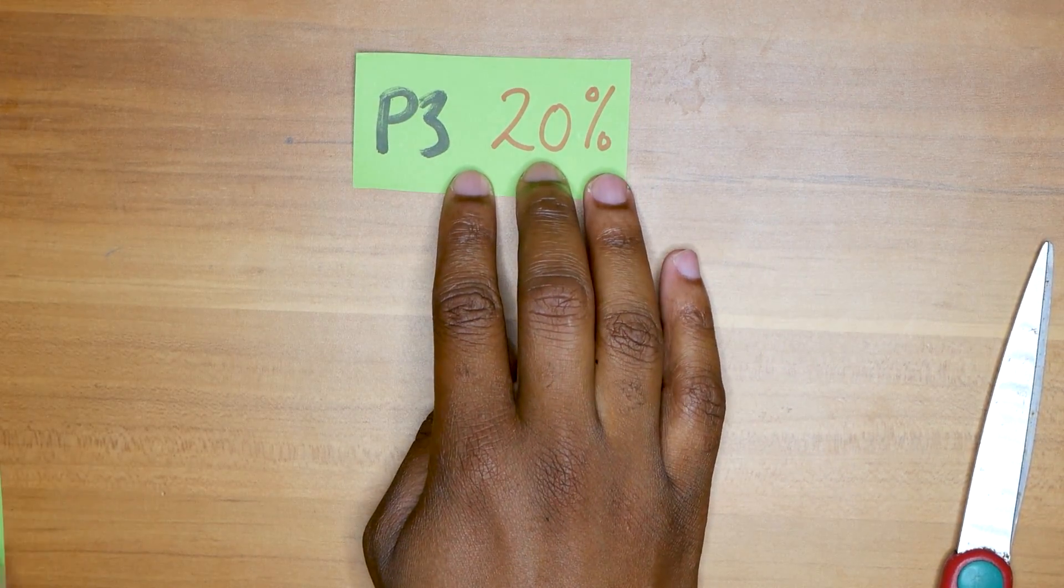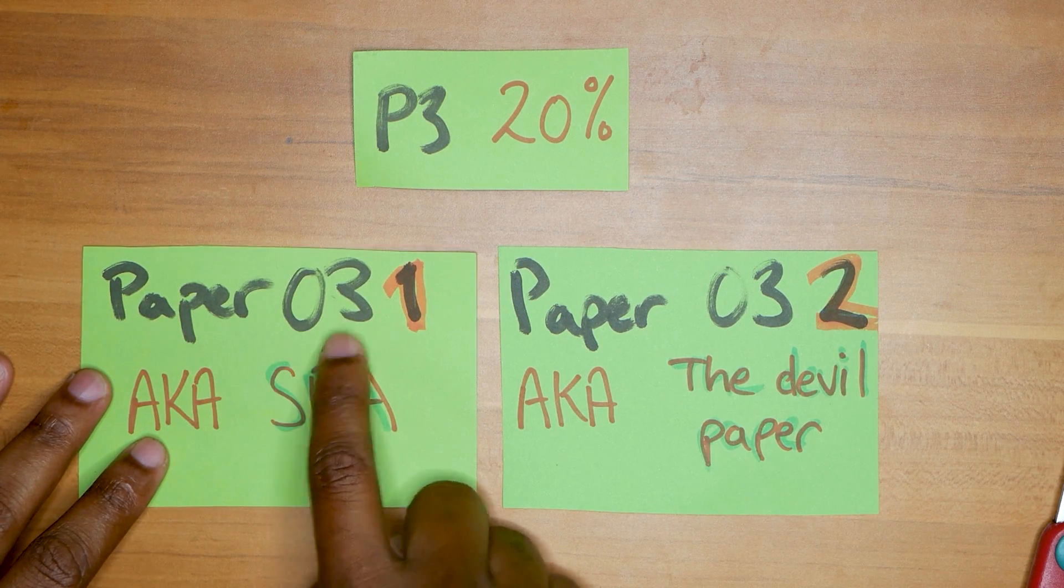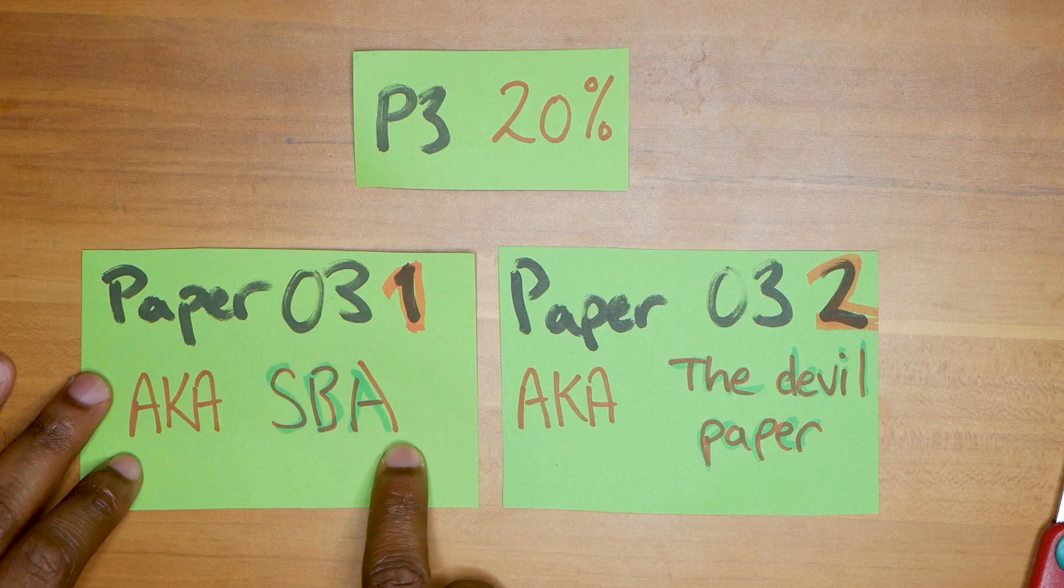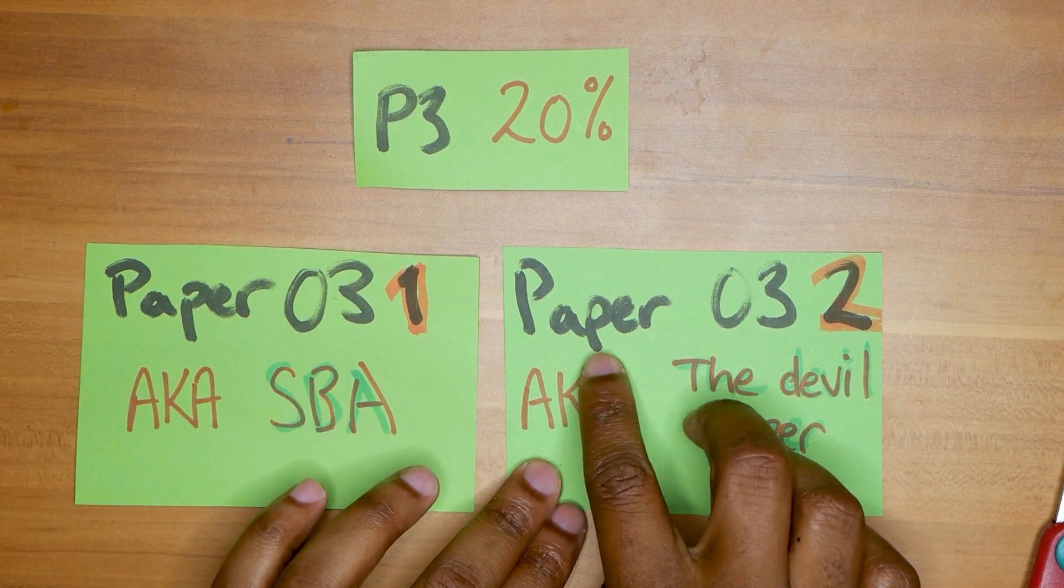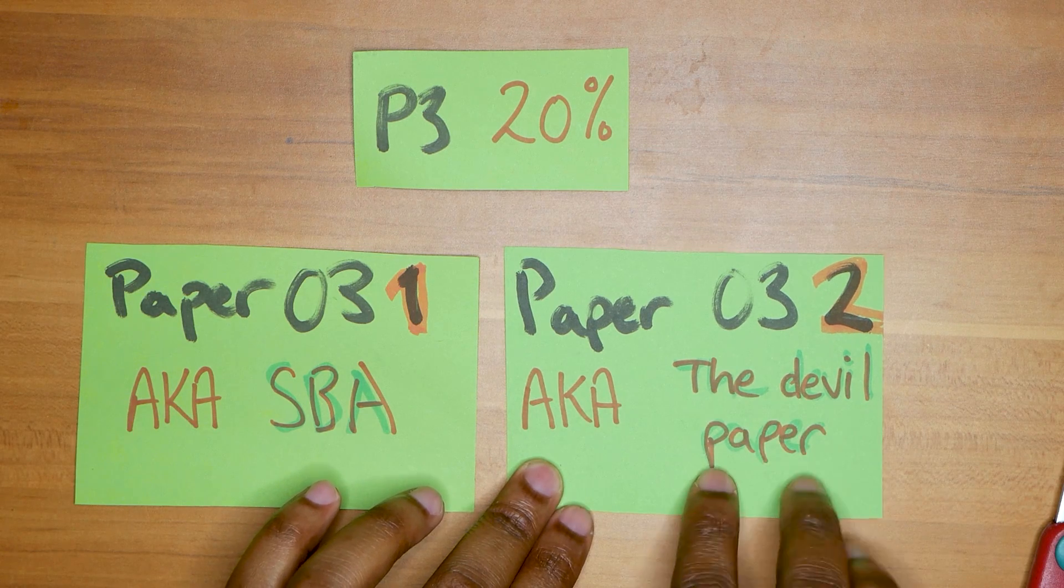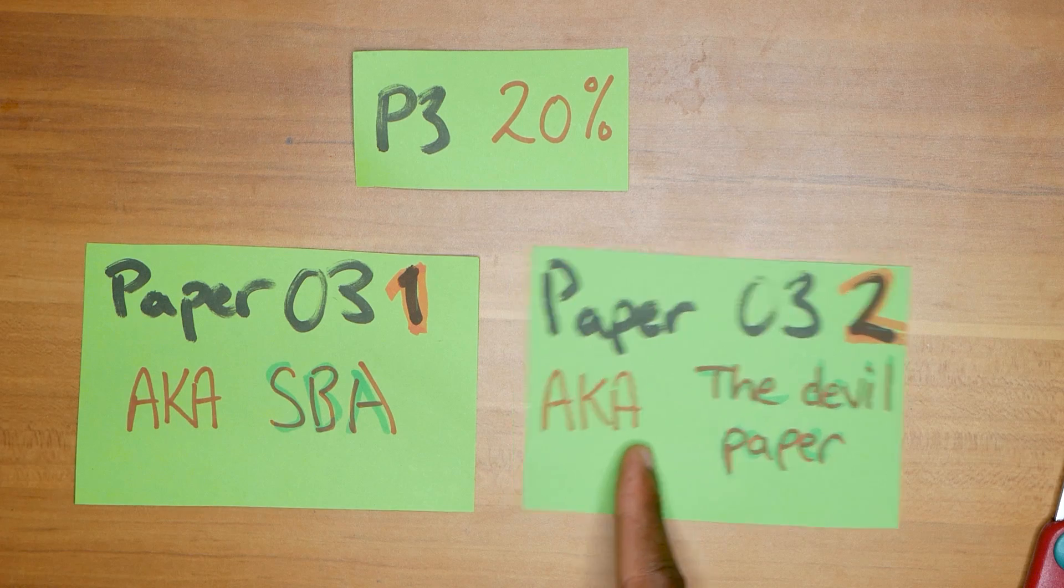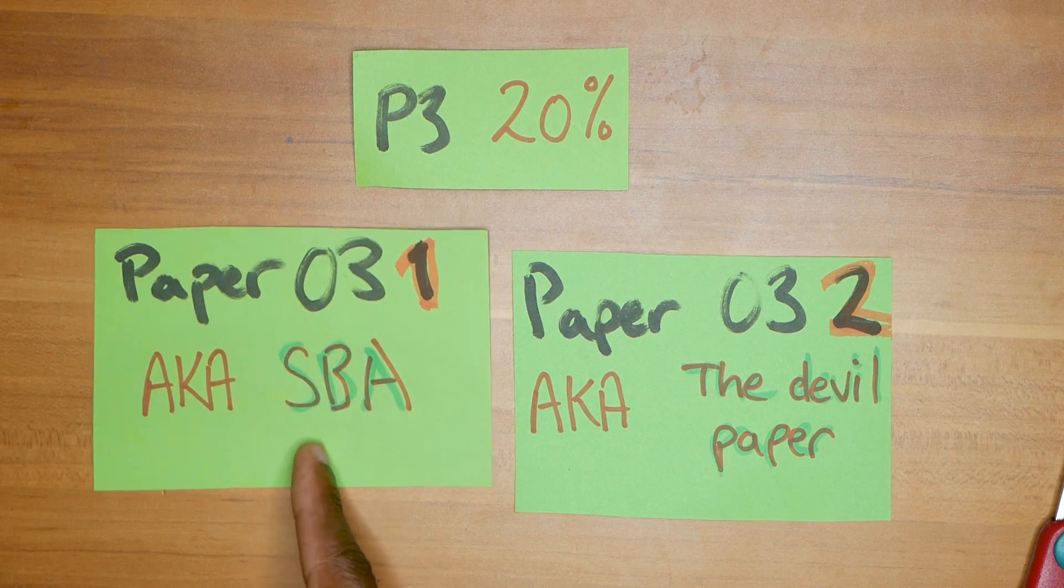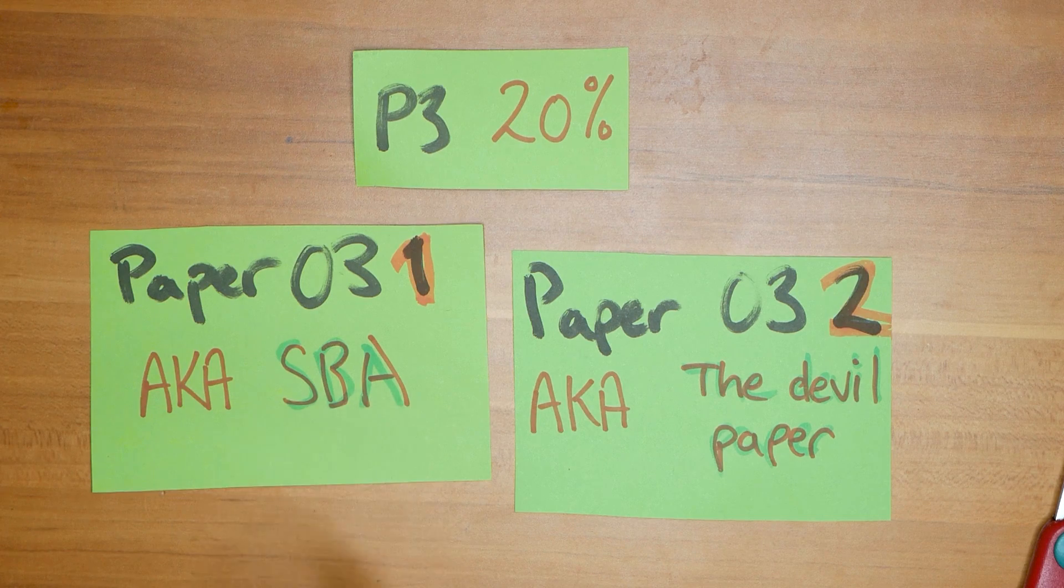But Paper Three, that's 20 percent. The Paper Three can be thought of as either Paper 031, this is the SBA for students doing it in school, or Paper 032, the devil paper, that's what my subscribers call it. This one is for private students or resit students who don't have an SBA.